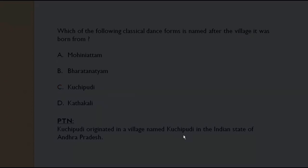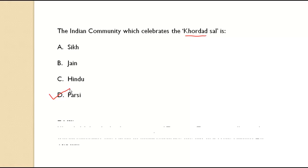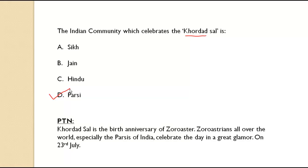Which Indian community celebrates Khordaad Sal? It is the Parsi community. Khordaad Sal is the birth anniversary of Zoroaster. Zoroastrians all over the world, especially the Parsees of India, celebrate this day with great glamour. It is observed on 23rd July.